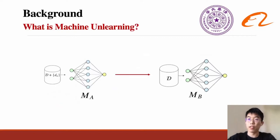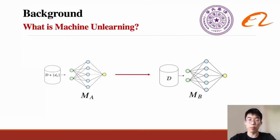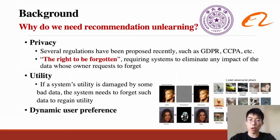For machine learning tasks, once a machine learning model is built, it has potentially memorized the training data. However, in many cases, it also needs to forget certain sensitive data and any influence of this data. This is called machine unlearning. So why do we need machine unlearning, especially for recommendation models?